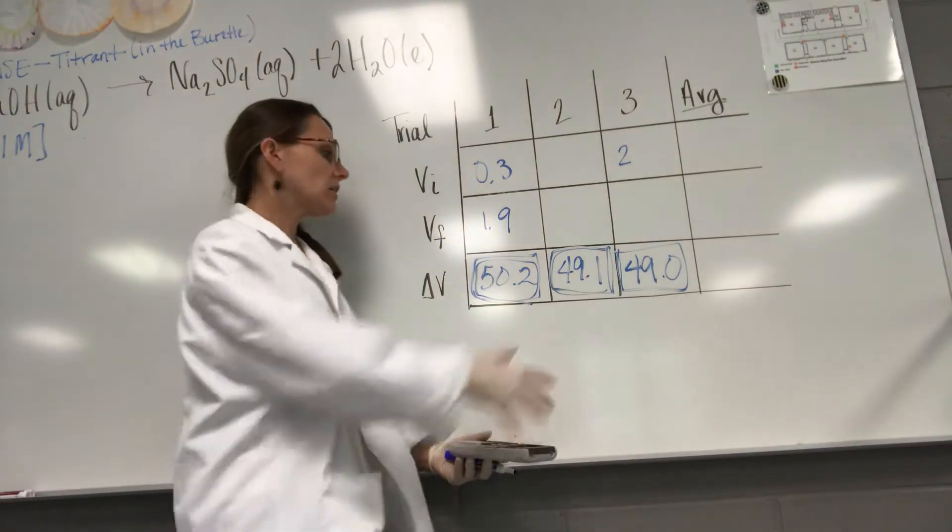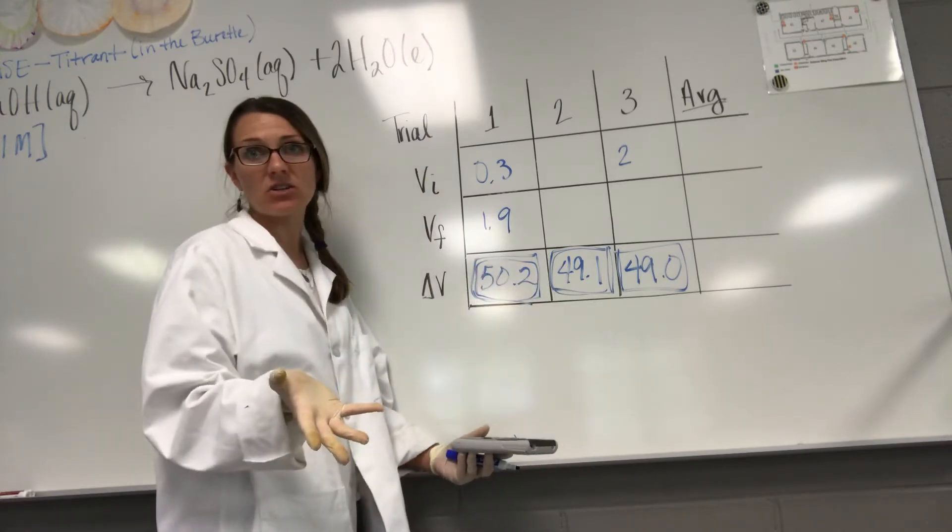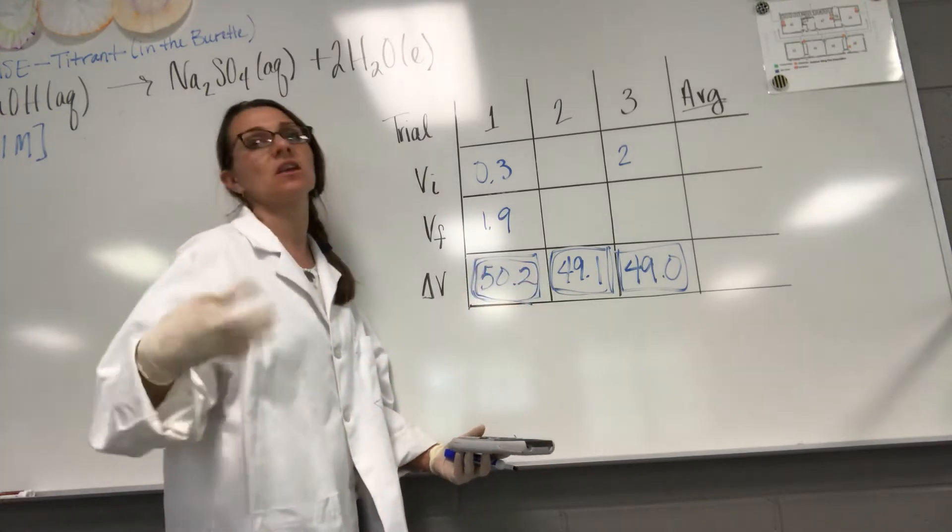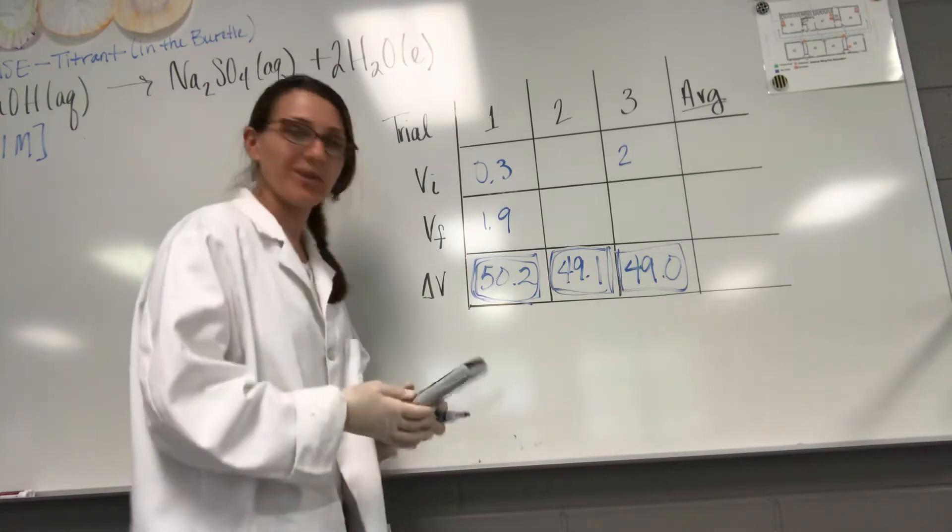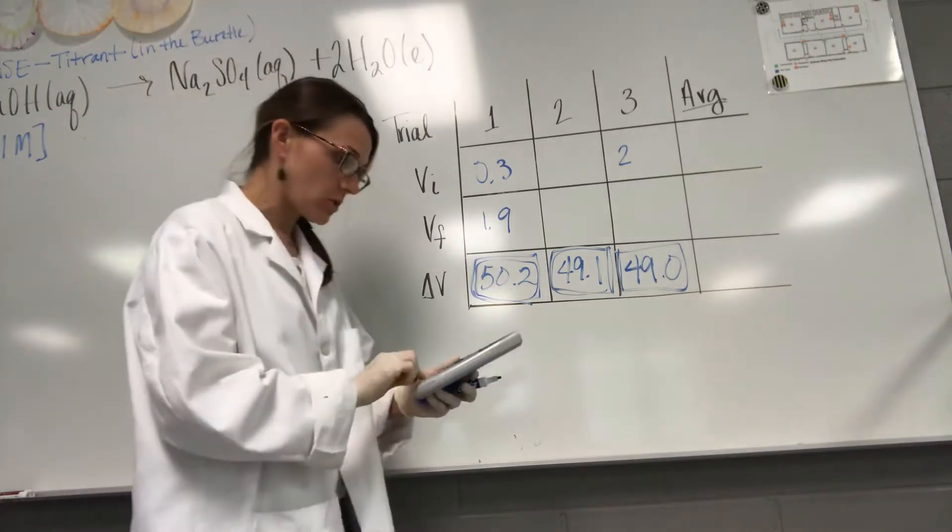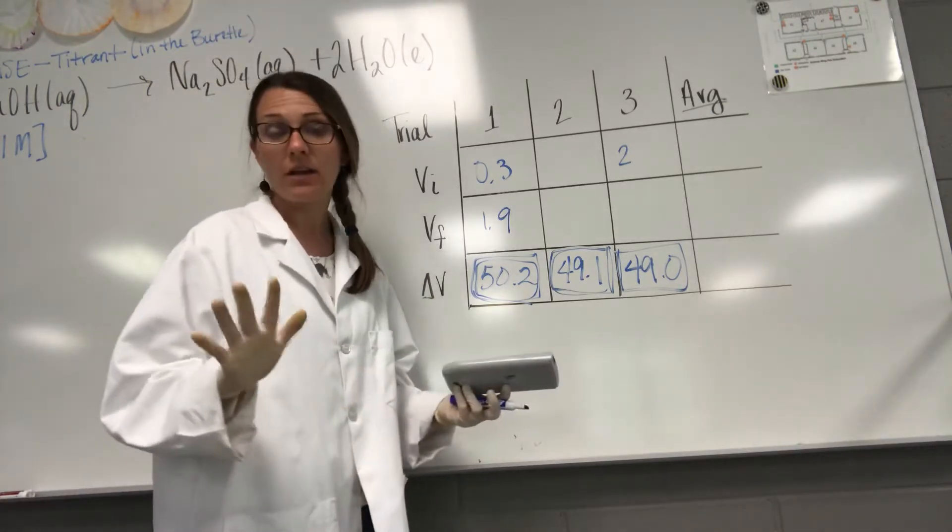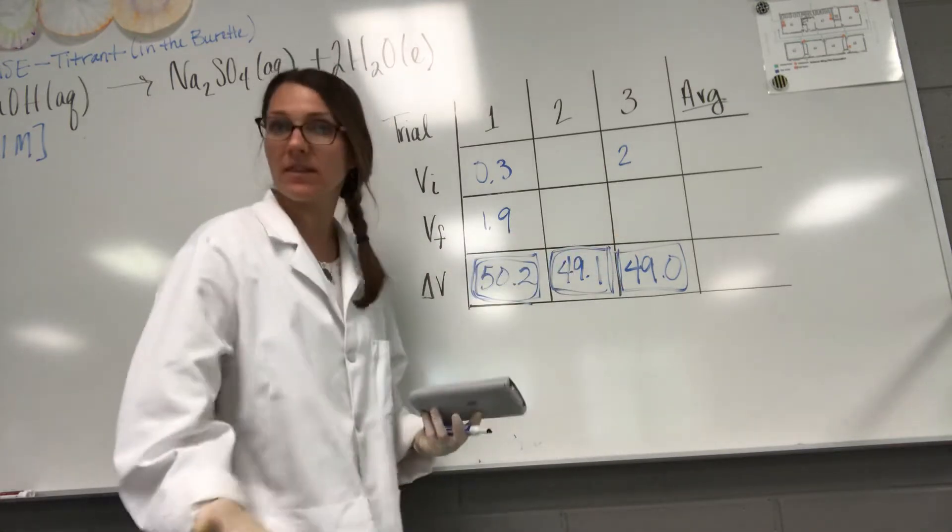When you're doing your very first titration, your first trial in particular might be quite a bit off, maybe by like 10 milliliters or so. That's because you're just getting used to it and maybe you have overshot the equivalence point just by not adding drop by drop. So when you come back to the lab and you have that experience, don't be alarmed if your data doesn't look exactly like mine.